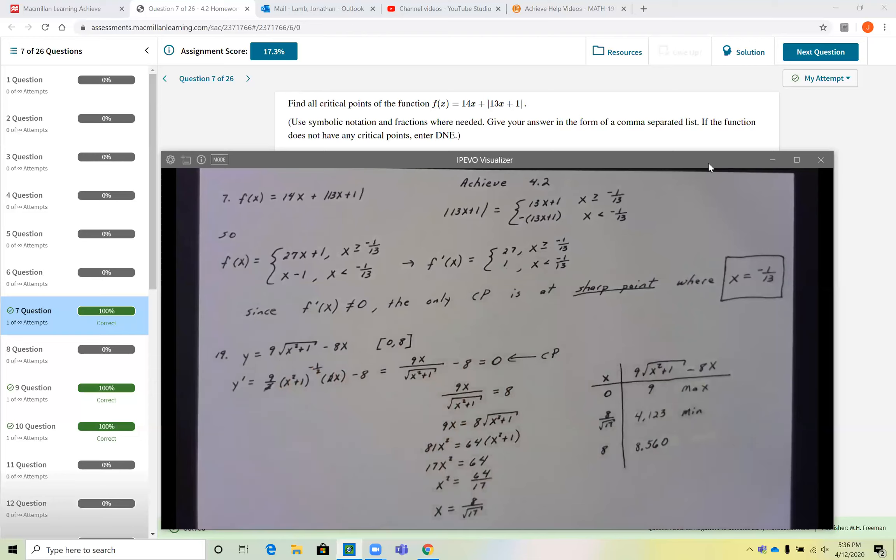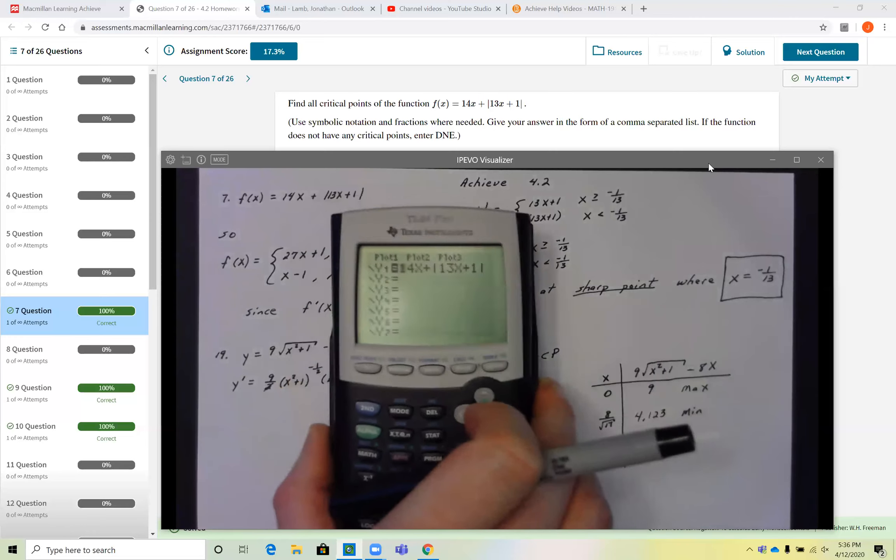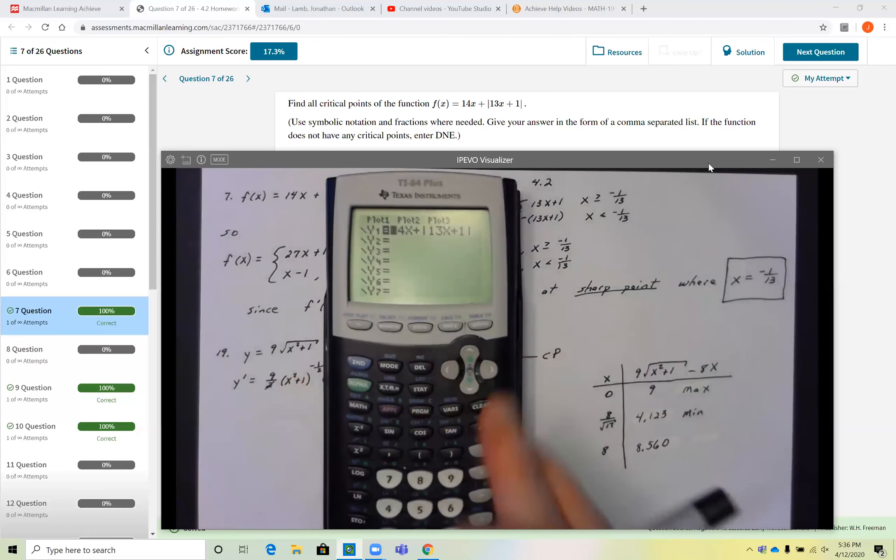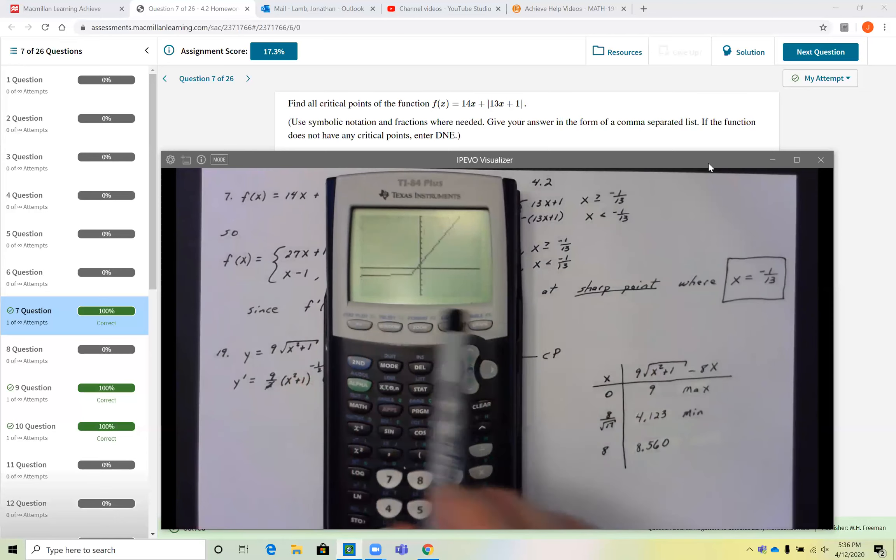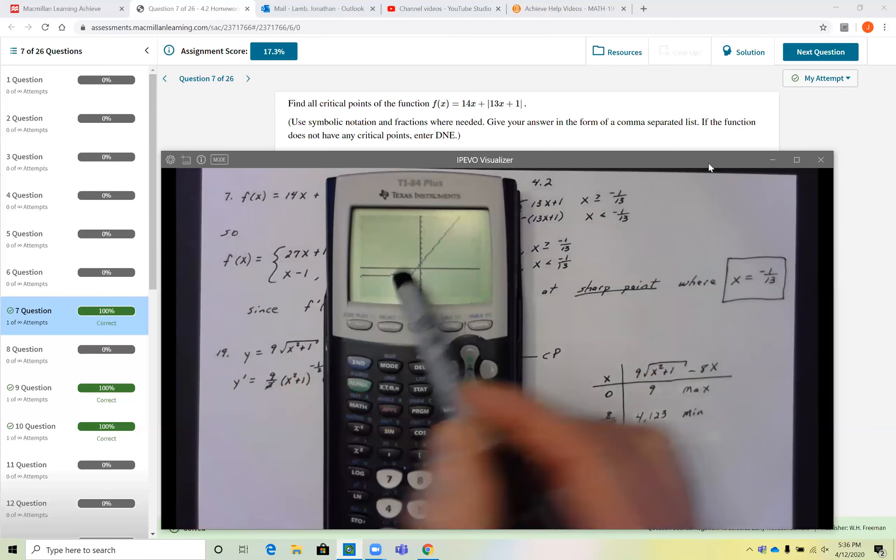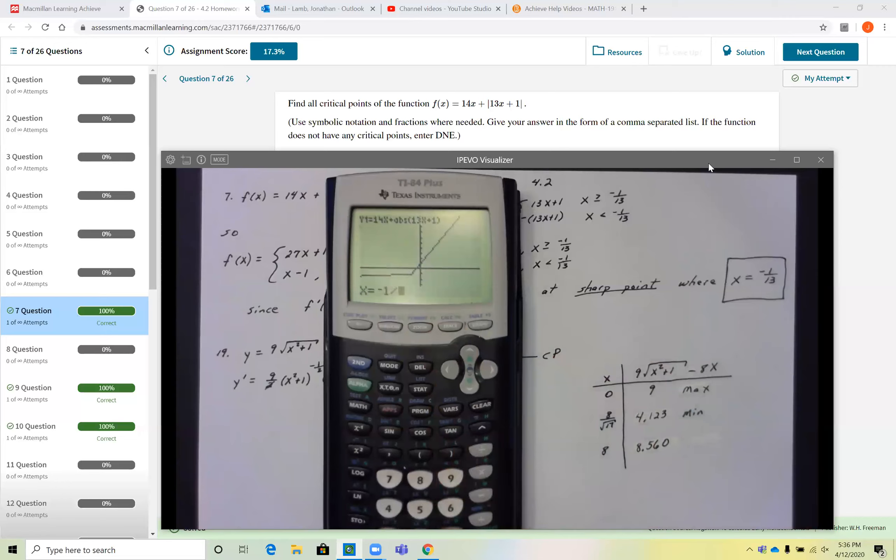However, you are going to get critical points by finding whenever this function has a sharp point. You say sharp point, we're supposed to remember absolute value functions always have sharp points. I went ahead and graphed this one out for you. We have 14x plus the absolute value of 13x plus 1. If I look at the graph of that, you can see that you do have that sharp point. And that sharp point is at the value when x is negative 1 over 13.